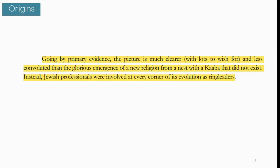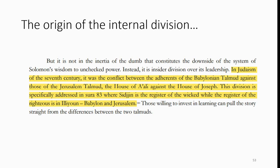Going by primary evidence, Jewish professionals were involved at every corner of Islam's evolution as ringleaders. In 7th century Judaism the conflict was between adherents of the Babylonian Talmud against those of the Jerusalem Talmud — the house of Ali against the house of Joseph. This division is specifically addressed in Surah 83, and those willing to invest in learning can pull the story straight from the differences between the two Talmuds.